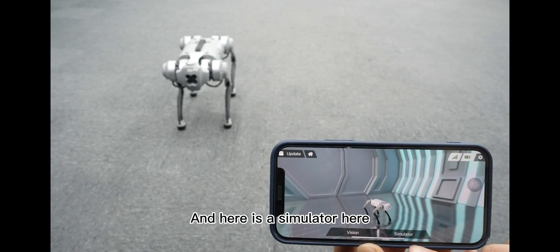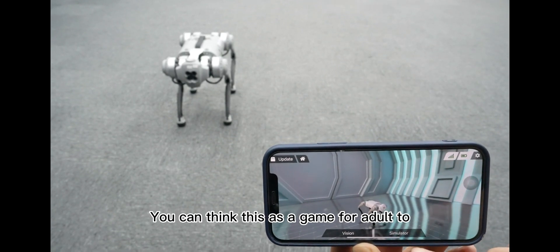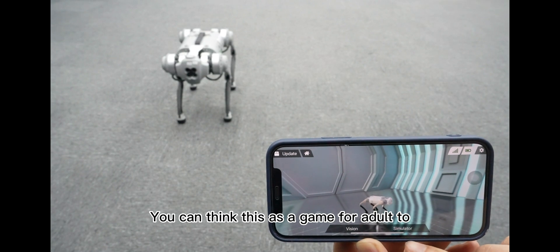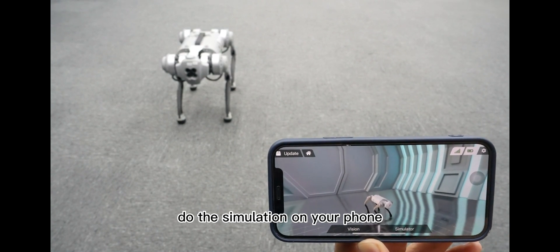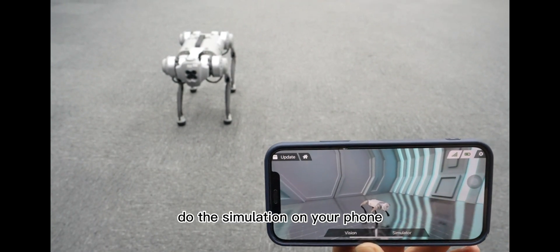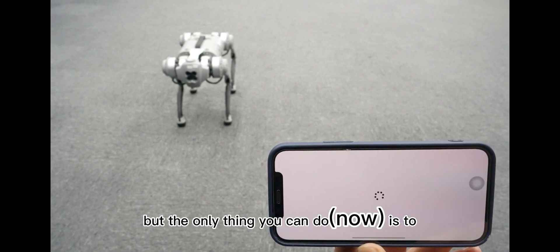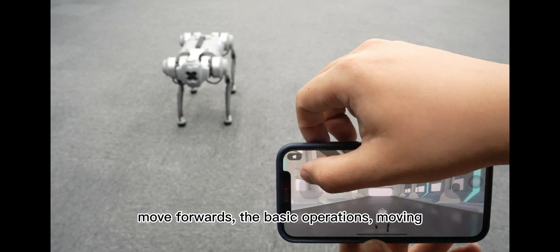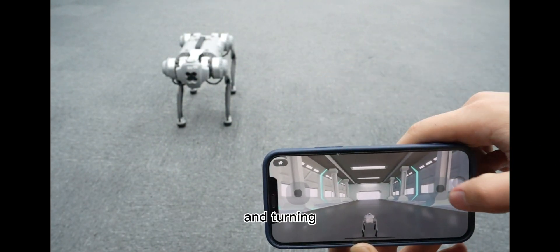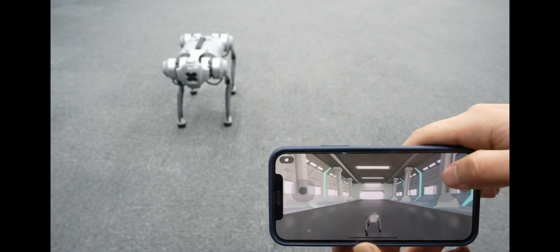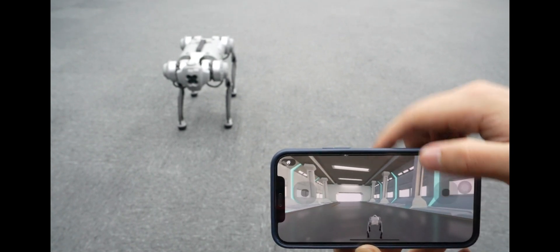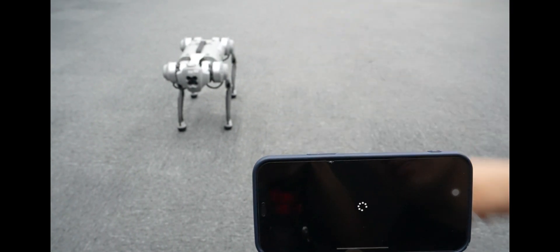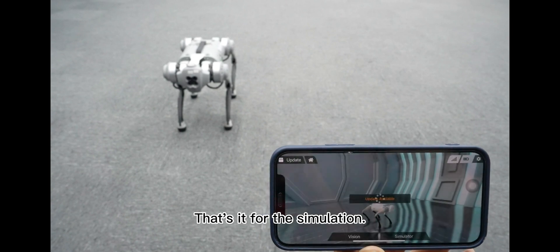And here is a simulator here. You can think of this as a game for adults to do the simulation on your phone, but the only thing you can do is to move forward the basic operations, moving, and turning, facing down, facing up. That's it for the simulator.